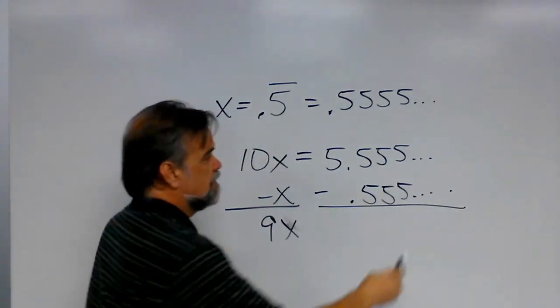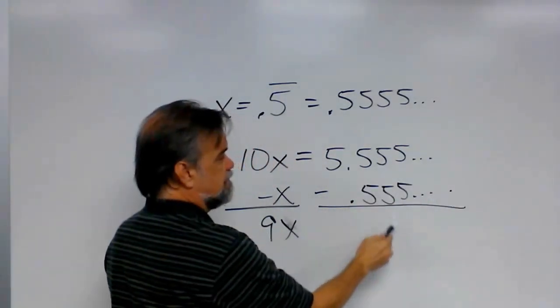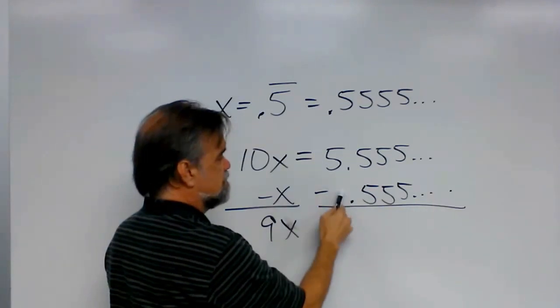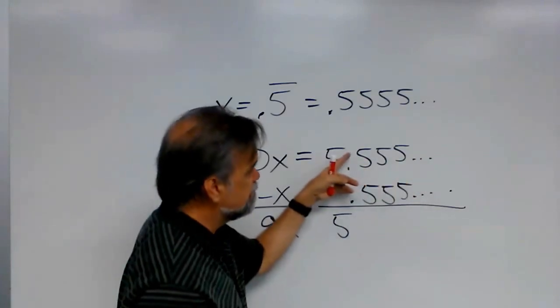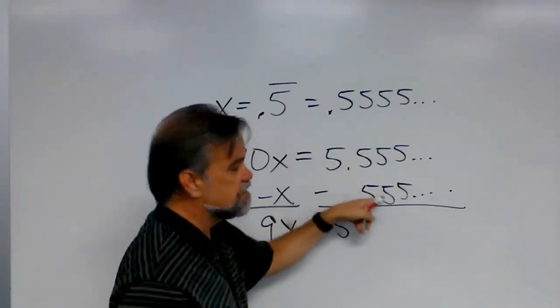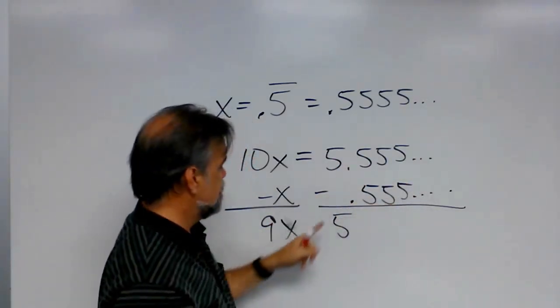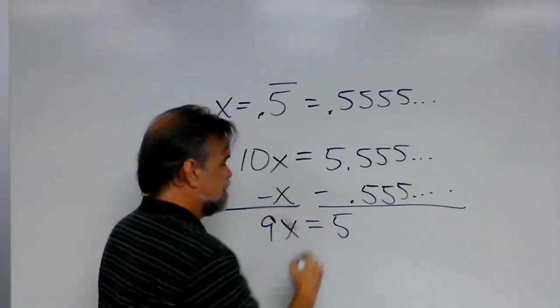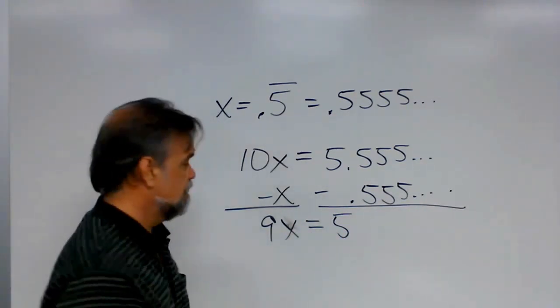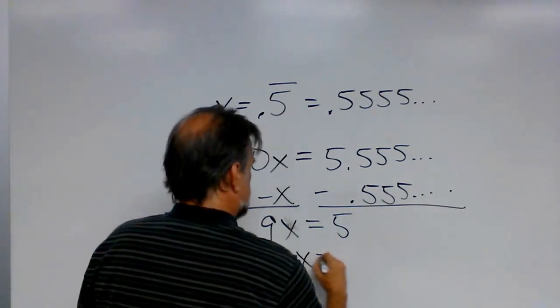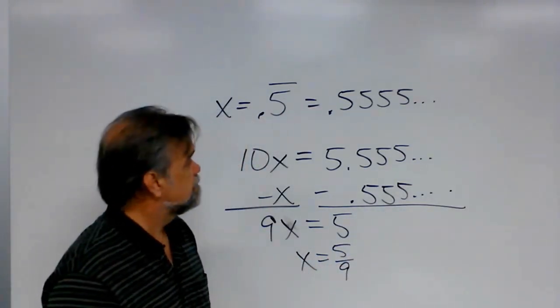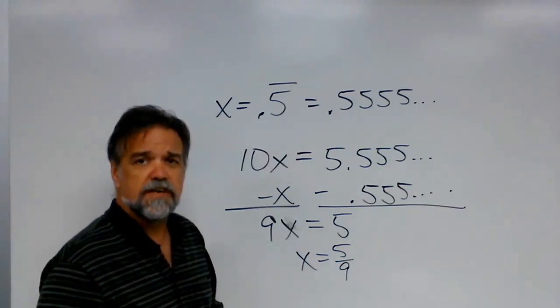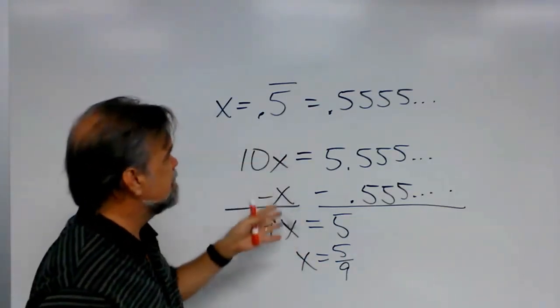And what happens? 5 minus 5 is 0, 5 minus 5 is 0, 5 minus 5 is 0, 5 minus 0 is 5. So, all of this decimal stuff just cancels itself out, and you end up with 9 times x equals 5, and what does that mean? It means that x equals 5 ninths. And as a matter of fact, you can kind of tell from looking at this,